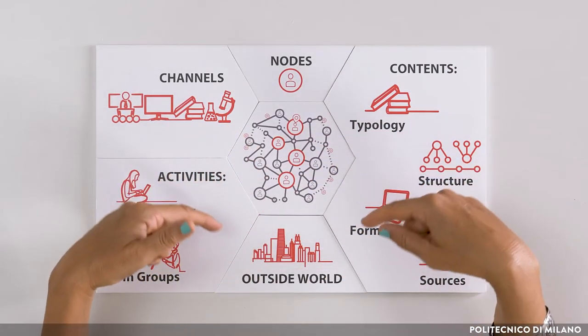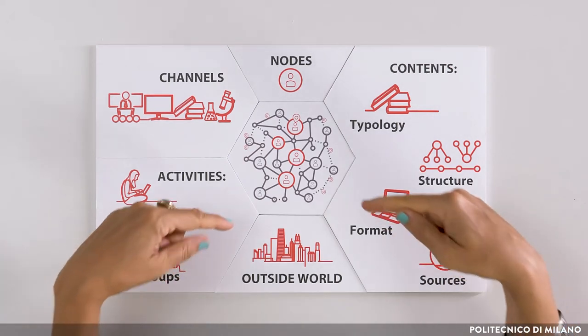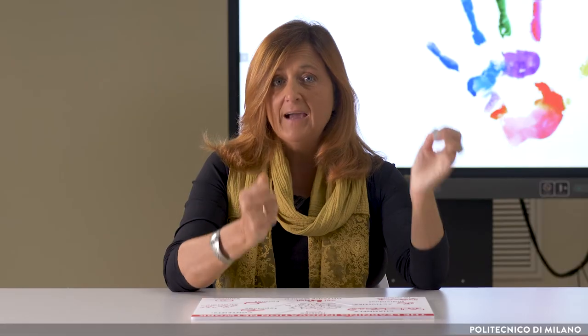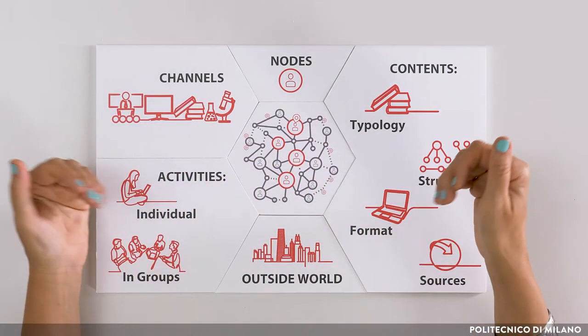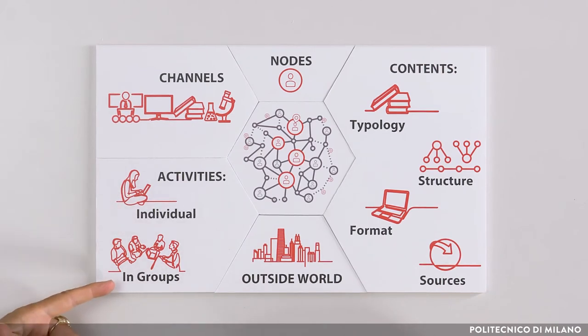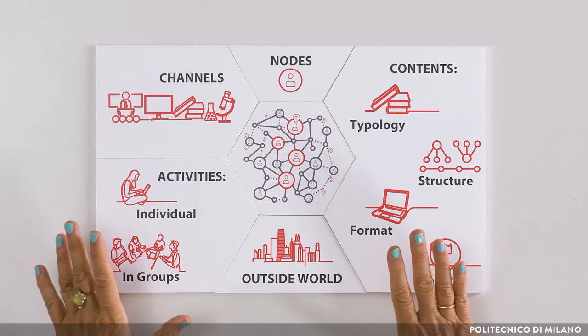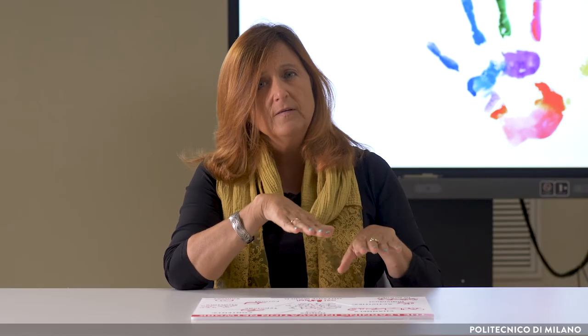In order to visualize it, we can try to represent it with a network where we can represent the learning experience. In this network, the nodes are the active subjects of the experience who will need to be understood and observed in terms of their characteristics. The links among nodes are the physical and virtual channels that are used to support the communication among the actors of the learning experience, that will be activated either individually or in groups. And finally, we have the relevant role of the outside world, a usually underestimated pillar in building the intended learning outcomes.